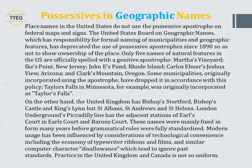Place names in the United States do not use a possessive apostrophe on federal maps and signs. The United States Board on Geographic Names has deprecated the use of the possessive apostrophe since 1890 so as not to show ownership of the place. Only five names of natural features in the U.S. are officially spelled with a genitive apostrophe: Martha's Vineyard, Ike's Point (New Jersey), Johnny's Pond (Rhode Island), Carlos Elmer's Joshua View (Arizona), and Clark's Mountain (Oregon). Some municipalities originally incorporated using the apostrophe have dropped it; for example, Taylor's Falls in Minnesota was originally incorporated as Taylor's Falls.